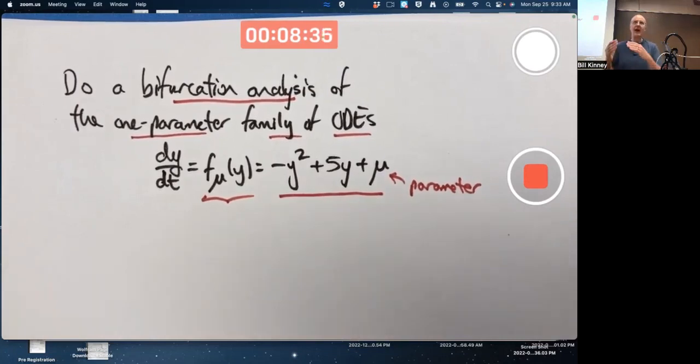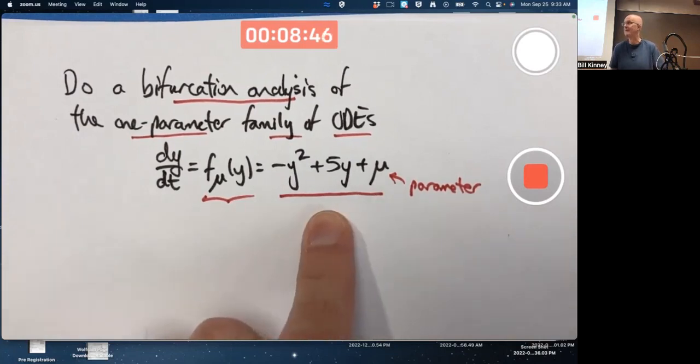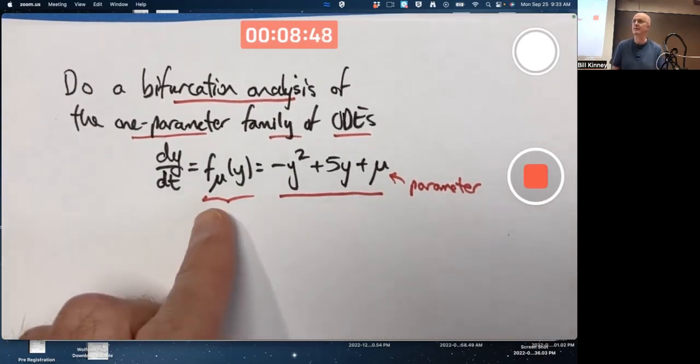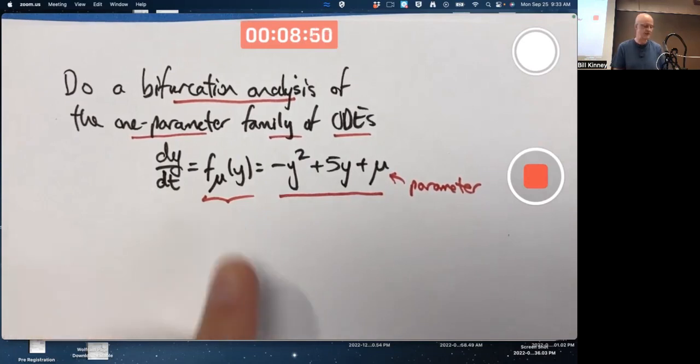So as mu changes, that graph is going to shift up or down. It's going to be a vertical translation. You can think about all that without thinking about differential equations. You can just be thinking about the graph of this. The point of the graph is to help you, though, to think about the differential equation, to help you draw phase lines.